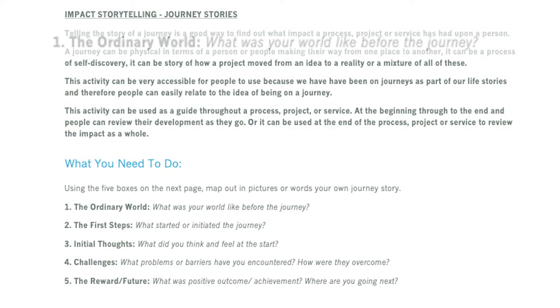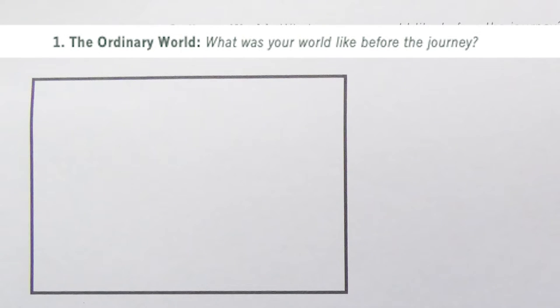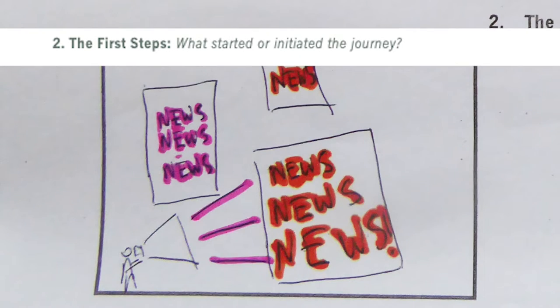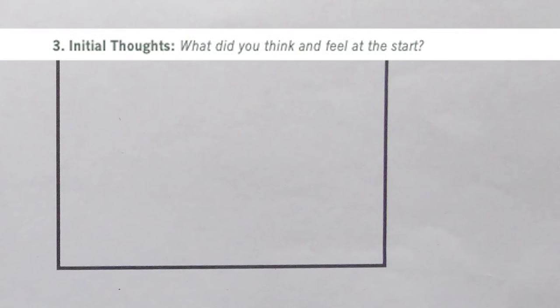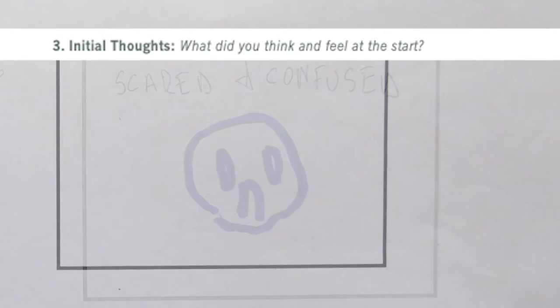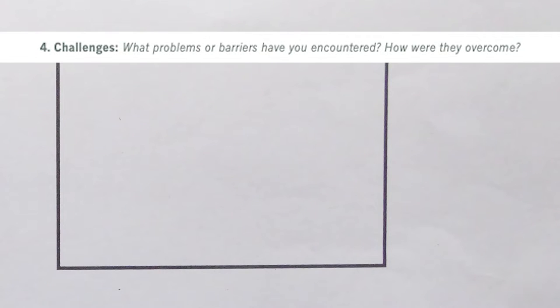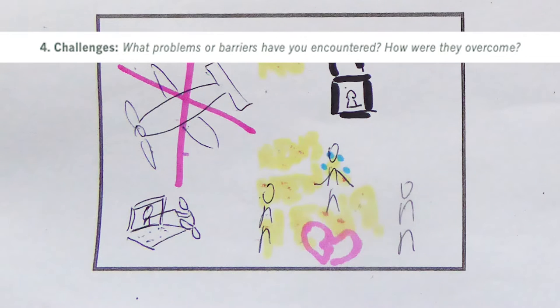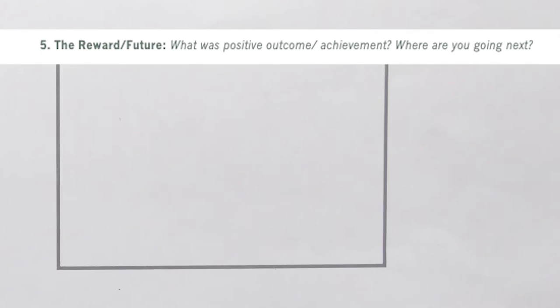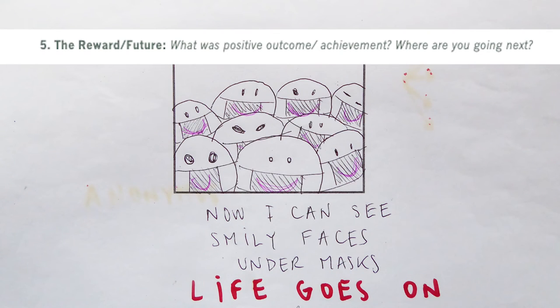The first question: The Ordinary World — what was your world like before the journey? The second question: The First Steps — what started or initiated the journey? The third question: Initial Thoughts — what did you think and feel at the start? The fourth question: Challenges — what problems or barriers have you encountered and how were they overcome? The fifth question: The Reward/Future — what was the positive outcome or achievement, and where are you going next?